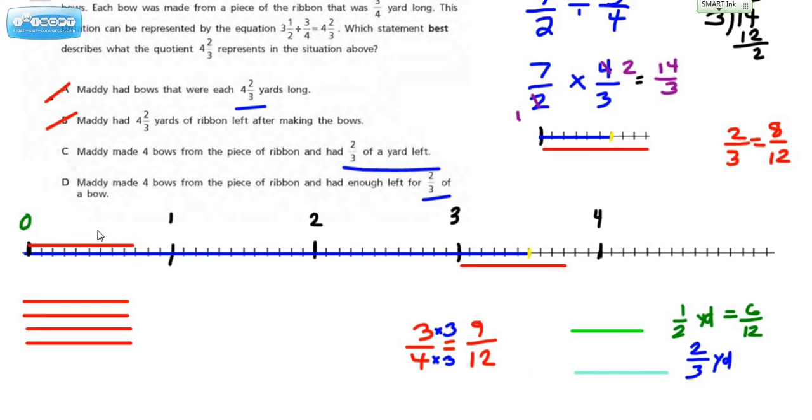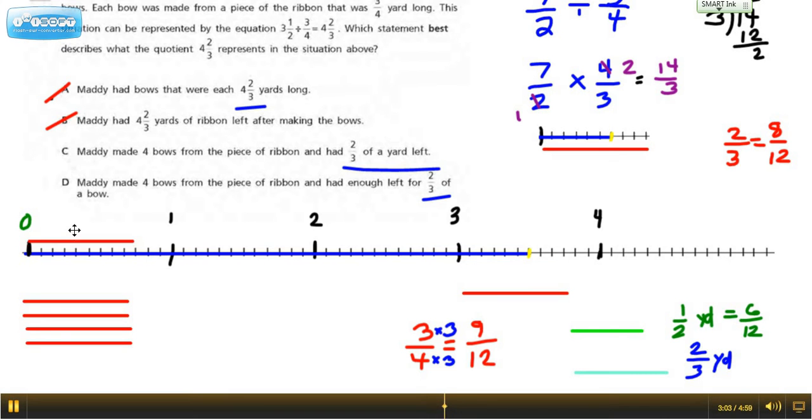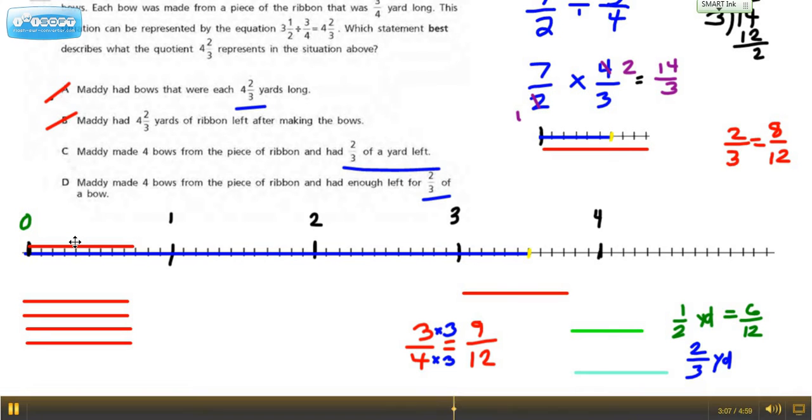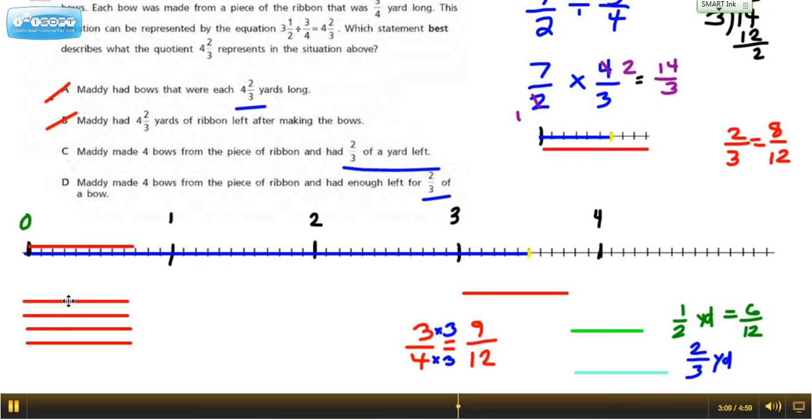If we actually take a look at this number line and figure out how many of these pieces here—this represents one bow. How many bows can we get out of this blue ribbon? There's one complete bow. There's a second bow, so now we're up to two bows. Here's our third bow, bow number 3. Bow number 4.